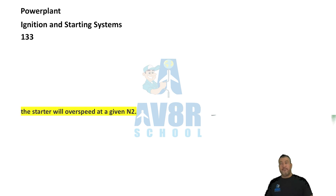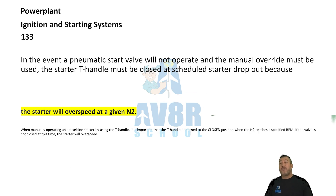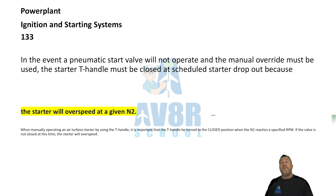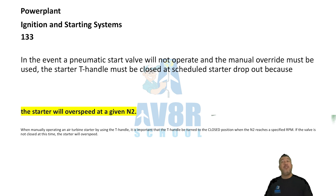Number 133. In the event a pneumatic start valve will not operate and the manual override must be used, the starter T-handle must be closed at the scheduled starter dropout because the starter will overspeed at a given N2.